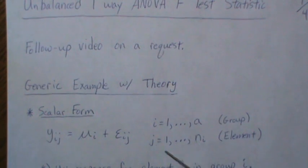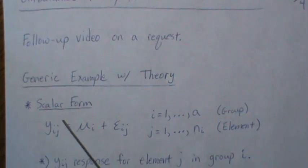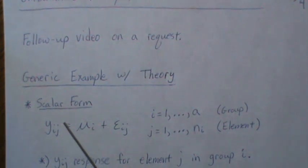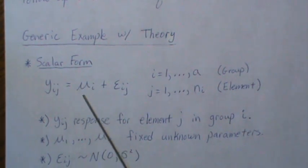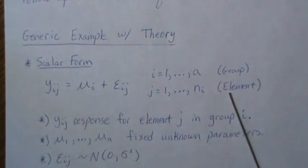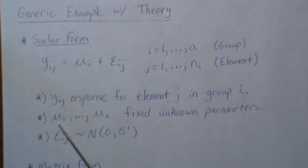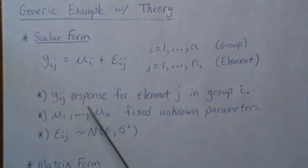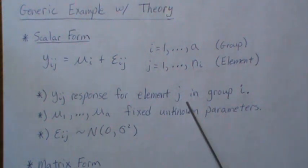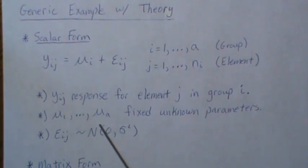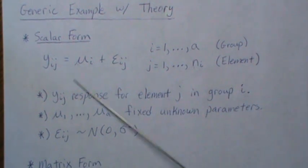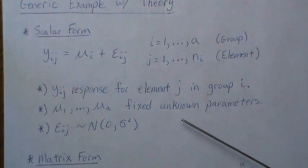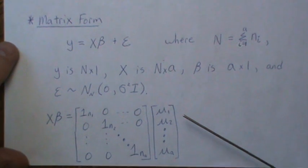So this is a follow-up video for her or him. We're going to do a generic example with theory mixed in. The model we looked at in the power and sample size video was the scalar form — the means model — where each data point has some group mean and some overall error term. Y_ij is the response for element j in group i; the μ_i are the group means or treatment means — fixed unknown parameters — and the error term is assumed normally distributed, which we need when we develop the F test.